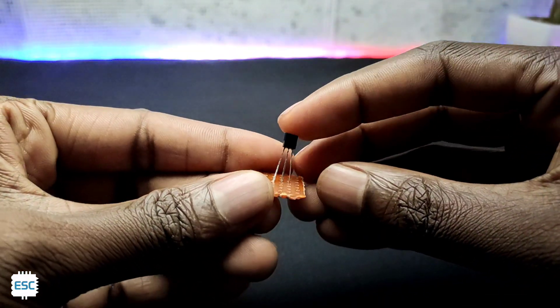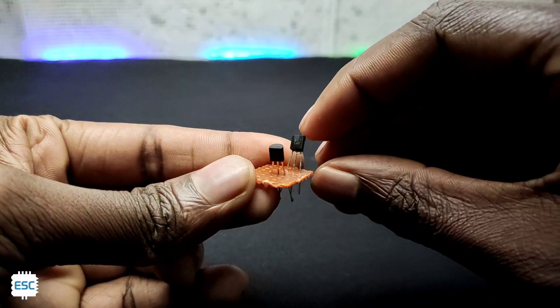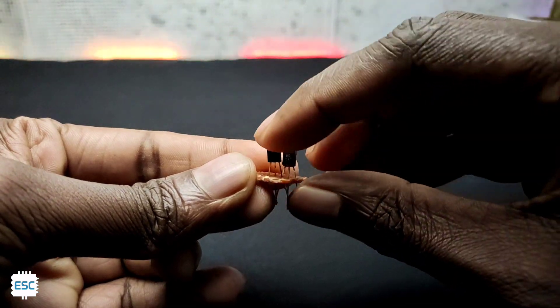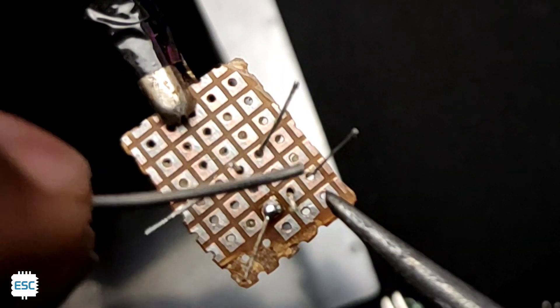Let's start building by placing transistors on perf board. Then I soldered that.